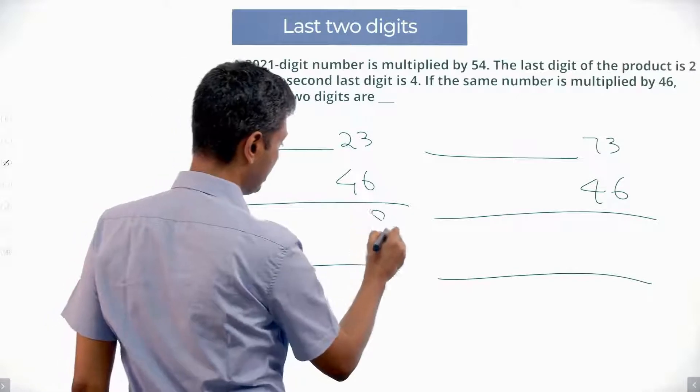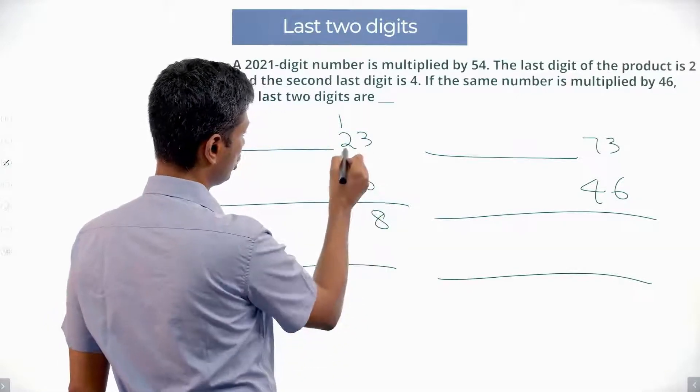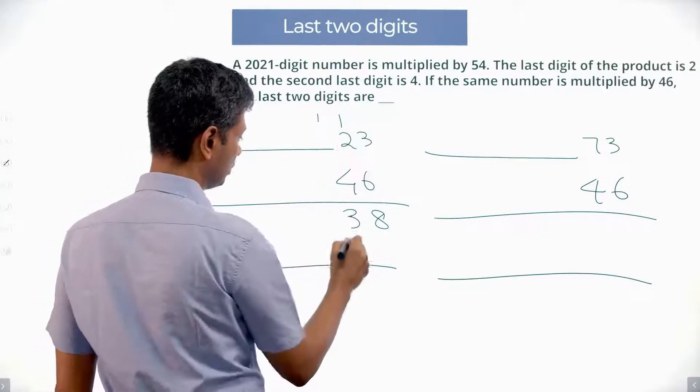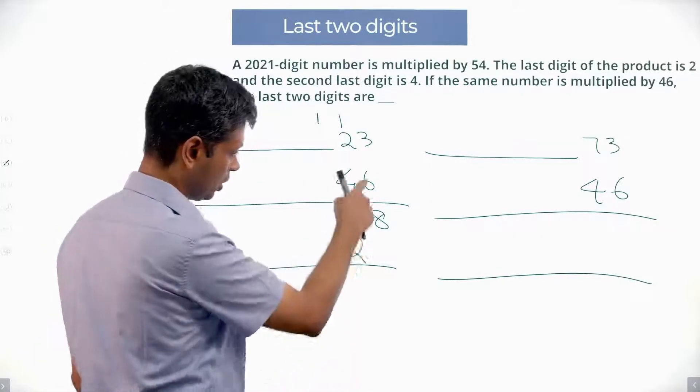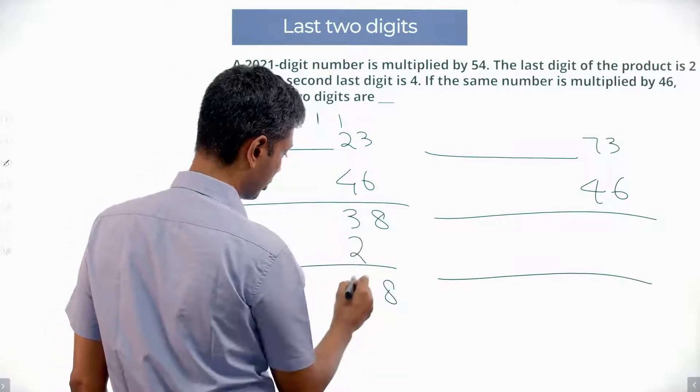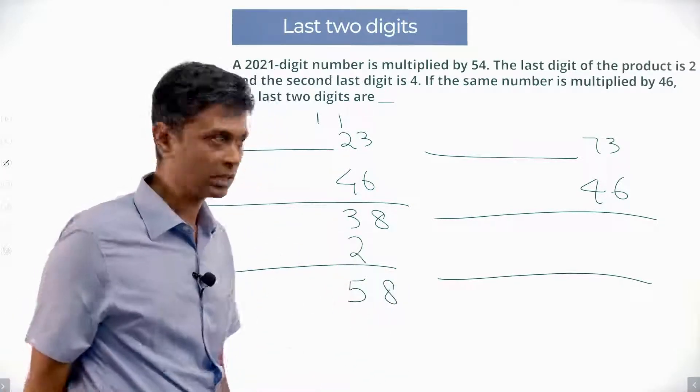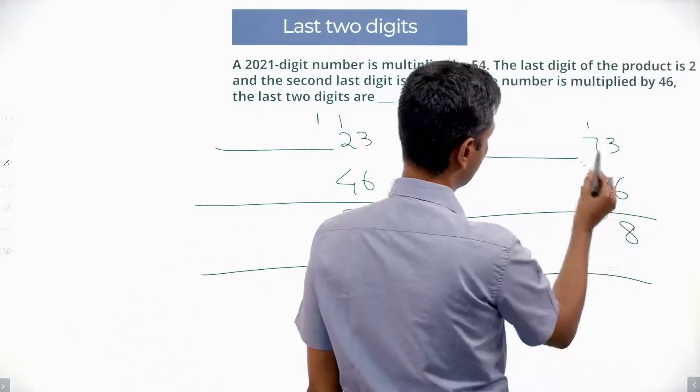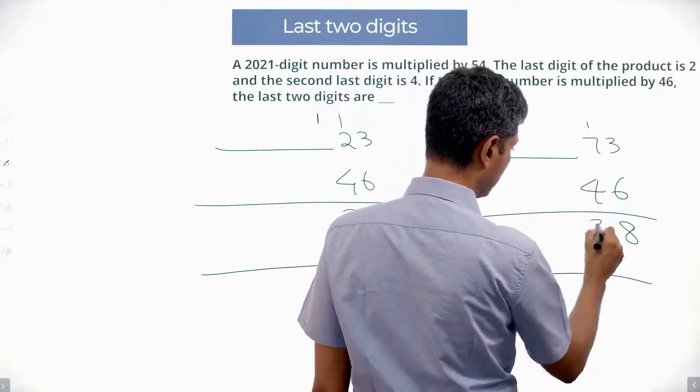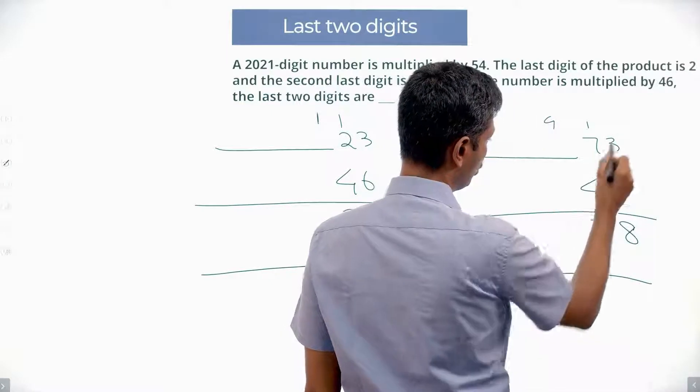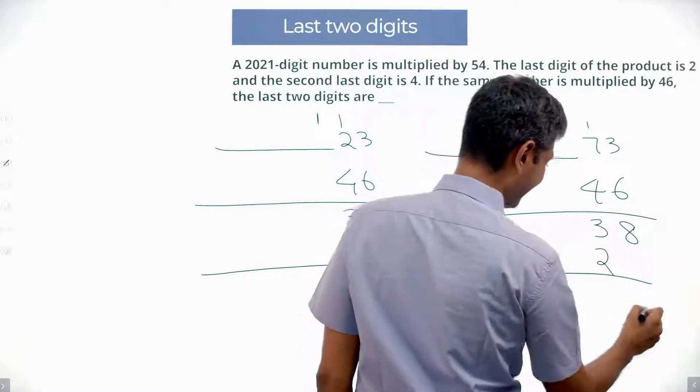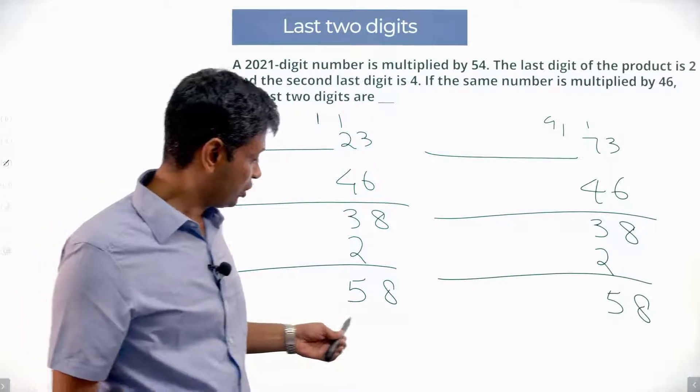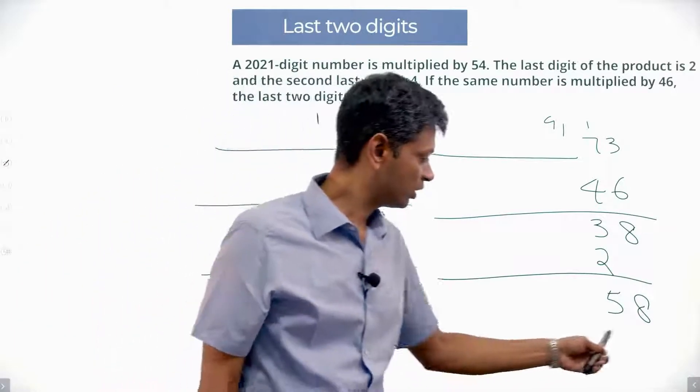6 3s are 18, 8, 1. 6 2s are 12. 12 plus 1, 13. 3, 1. 4 3s are 12, 2, 1 carried over. Likewise here. 6 3s are 18, 8, 1. 6 7s are 42. 42 plus 1, 43. 3, 4 carried over. 4 into 3, 12. 2, 1 carried over. Add these 2. 8 and 5. Or the last 2 digits in both cases is 58.